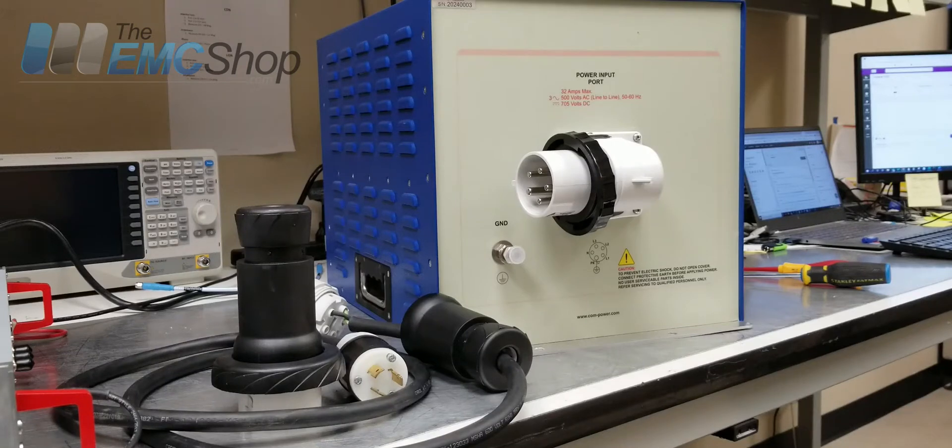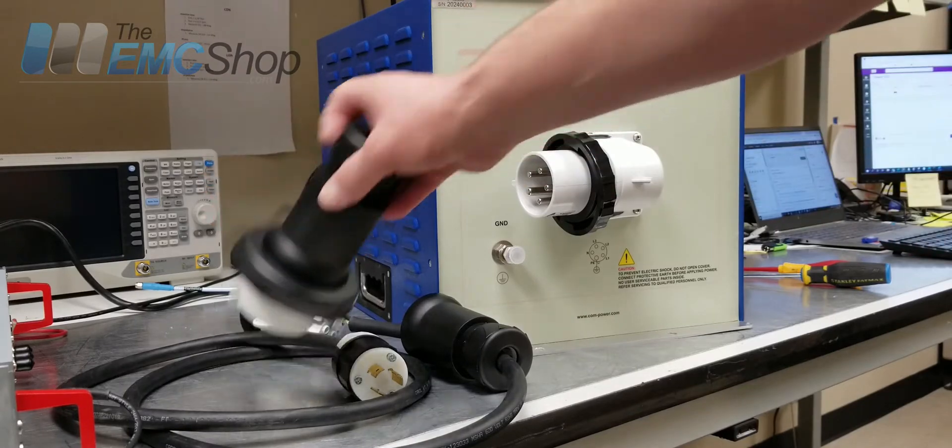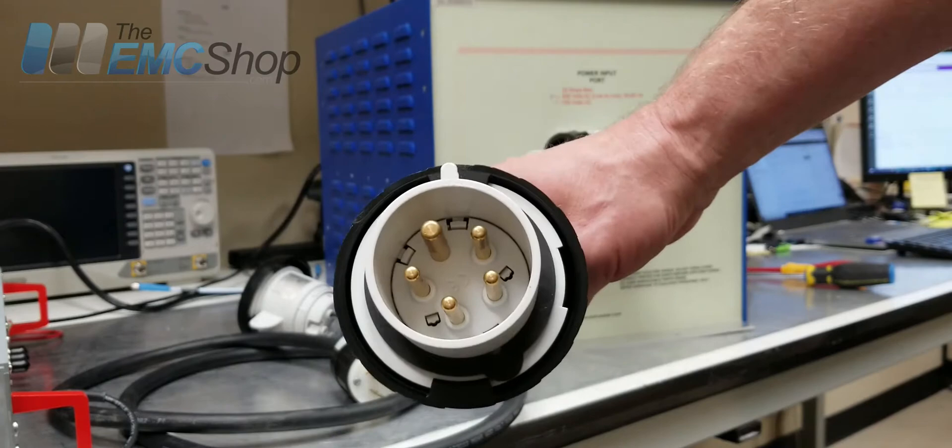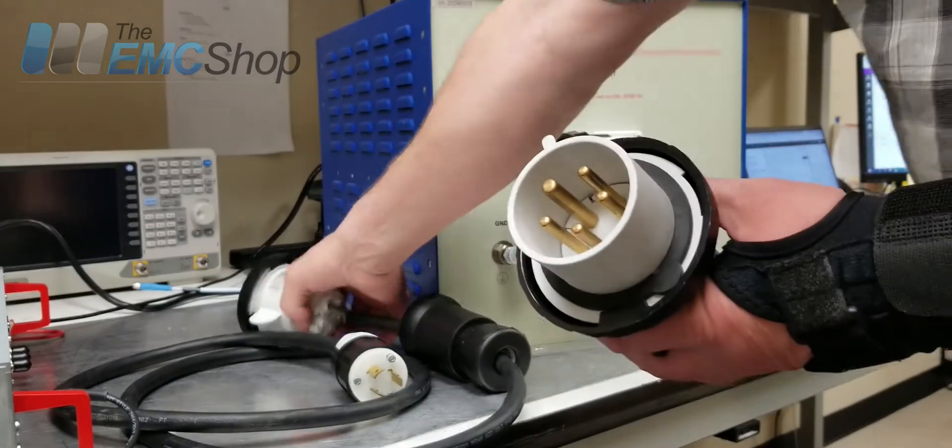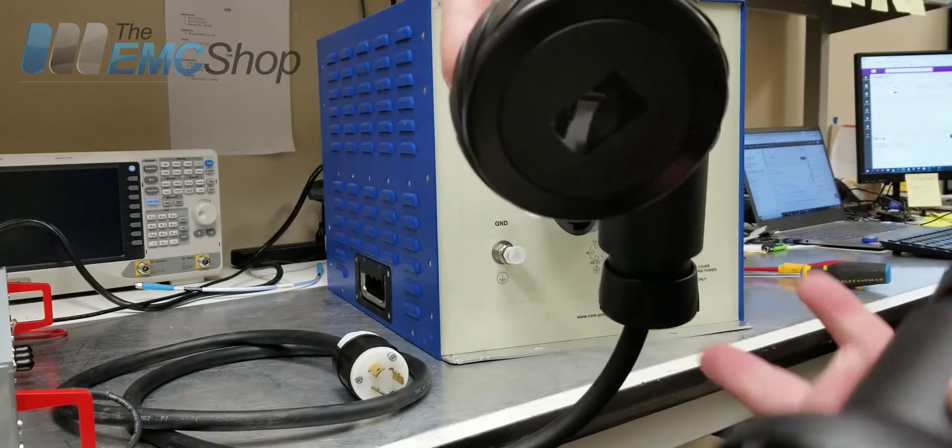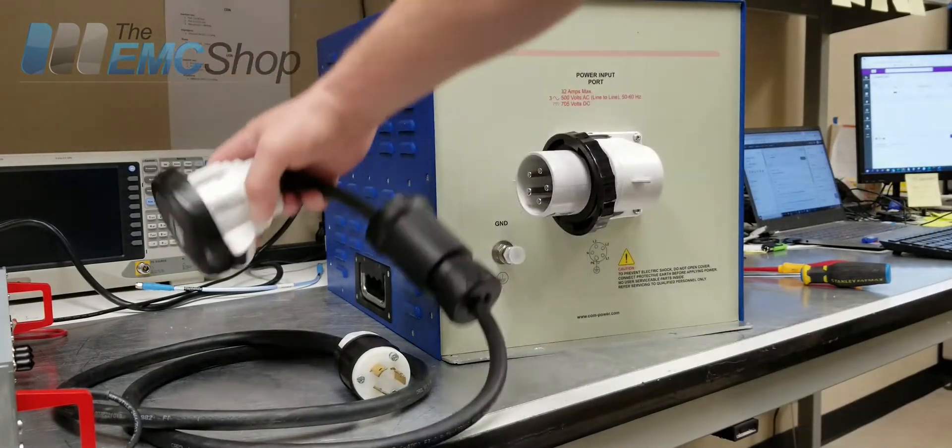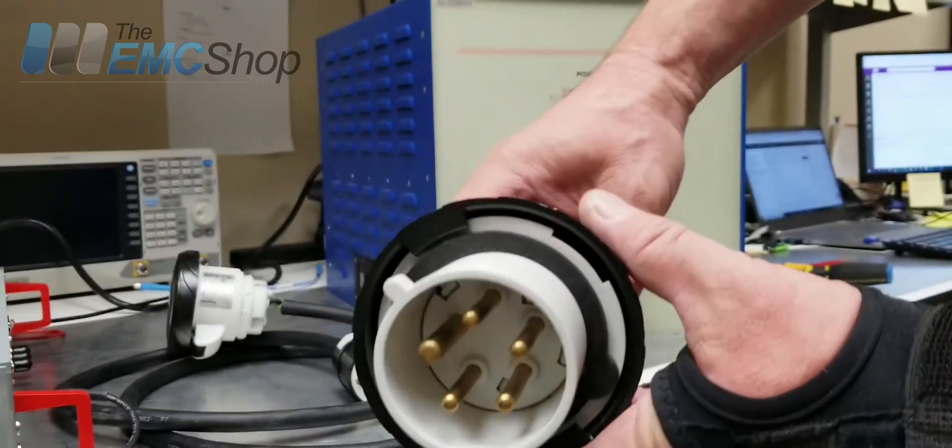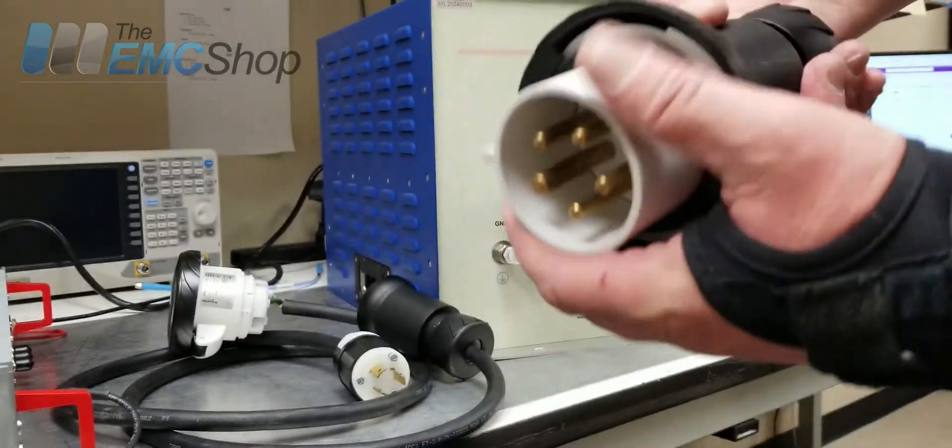This video demonstrates how to hook up supply power to a ComPower LI3P232 LISN. Each LISN comes with two connectors, one male and one female. Here's the female connector with a nice safety cap, so if it's unplugged, no one can stick their fingers in there and get shocked.